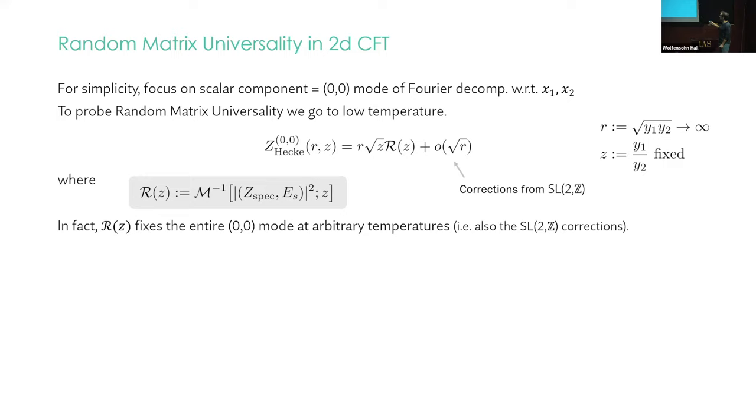The cusp forms drop out of this calculation because we're looking at the scalar mode. And there are corrections to this in the low temperature limit from SL(2,Z), but they're suppressed. Okay, so modular invariance means there are other terms here, but they don't matter in this limit. You can actually, this function R fixes the entire scalar mode at arbitrary temperatures. In other words, these corrections are fixed by this same function. So given the overlaps that fixes the whole thing, and R of Z is just this particular integral transform that pops out when you plug in the zero modes of the Eisenstein series.